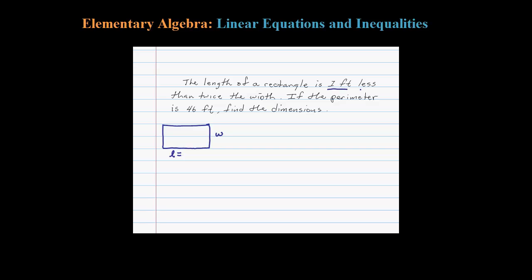One foot less than twice the width. So twice the width would be 2W, and one foot less than that is minus one. So the length is one foot less than twice the width. Here I've sort of identified my variables.